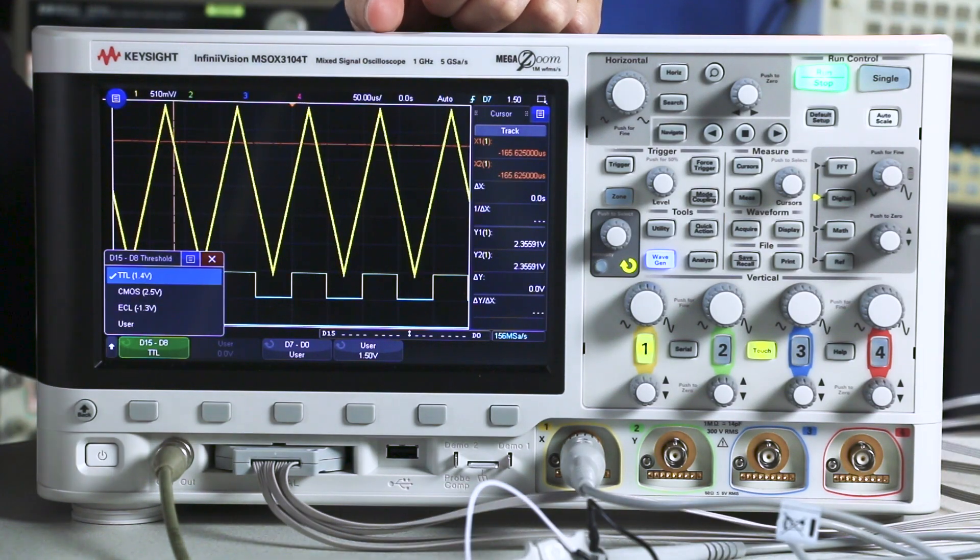For example, if I choose a TTL threshold, the scope is going to know that's 1.4 volts and I don't have to look it up in the spec.